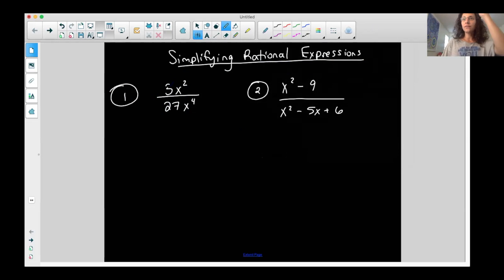It looks like I have a three, just focus on the numbers first, a three on the top, 27 on the bottom, and they're both divisible by three. So I can cross this out, three goes into three once, and three goes into 27 nine times. So I can simplify the numbers.